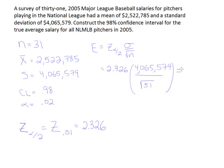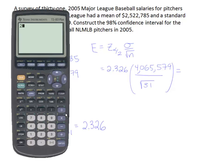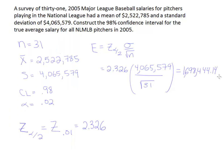Let's figure out what that turns out to be. So we have 2.326 times 4,065,579 divided by the square root of 31, which gives us 1,698,444.14. With that margin of error, we're then going to add and subtract it from the sample mean to finish up the interval.